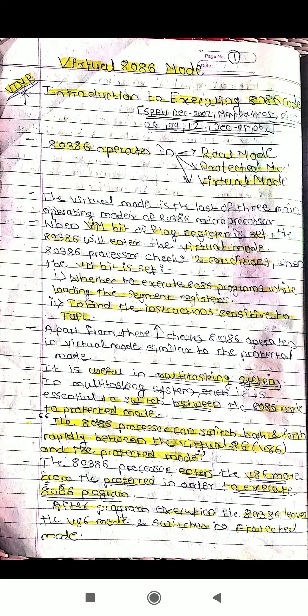The virtual mode is the third main operating mode of the 80386. For the virtual mode, the VM bit of the flag register must be set. We have discussed the 32-bit flag register — in that register, we have the VM bit, that is the virtual mode bit or virtual mode flag. When the VM bit is set, the processor will enter into the virtual mode.